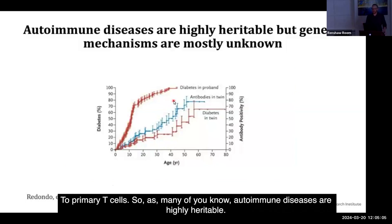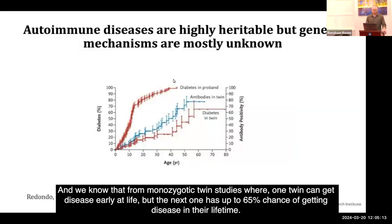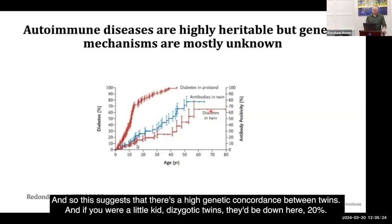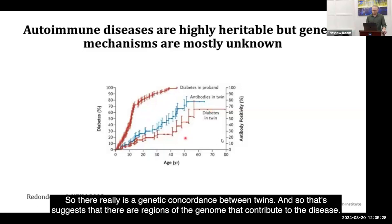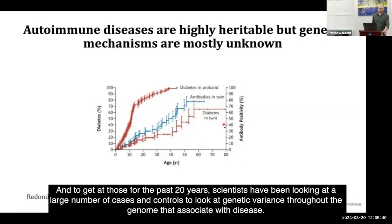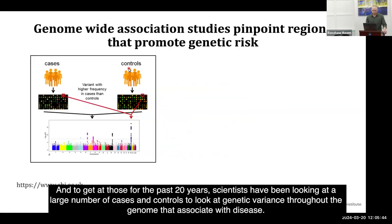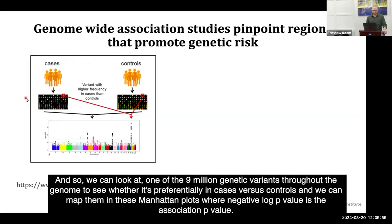As many of you know, autoimmune diseases are highly heritable. We know that from monozygotic twin studies, where one twin can get disease early in life, but the next twin has up to a 65% chance of getting disease in their lifetime. This suggests high genetic concordance between twins. If you look at dizygotic twins, they'd be down at around 20%. So there really is a genetic concordance, suggesting that there are regions of the genome that contribute to disease. For the past 20 years, scientists have been looking at large numbers of cases and controls to find genetic variants throughout the genome that associate with disease.